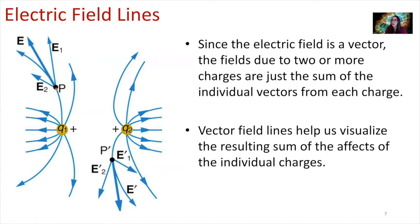At point P here we want to find the total electric field vector at that point, which is the vector E drawn in. At this point we have a vector representing the electric field due to charge one, and another vector representing the electric field due to charge two. The sum of those vectors gives us the direction of the electric field line at that point. You can do this at any point within this region — literally mapping out every single space to figure out the direction of the electric field and draw contours showing your field lines.